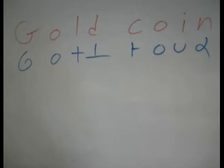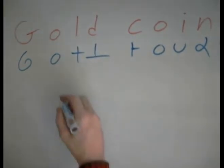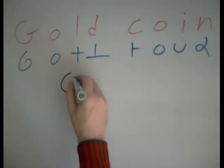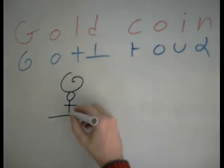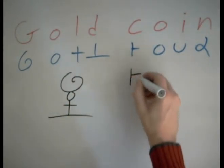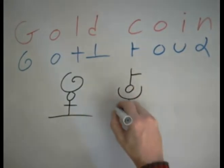So let's start with the simplest possible combination. Simplest combinations are all pretty easy. So we've got G, curl a little more, O, L, D, coin. C, O, I, N.